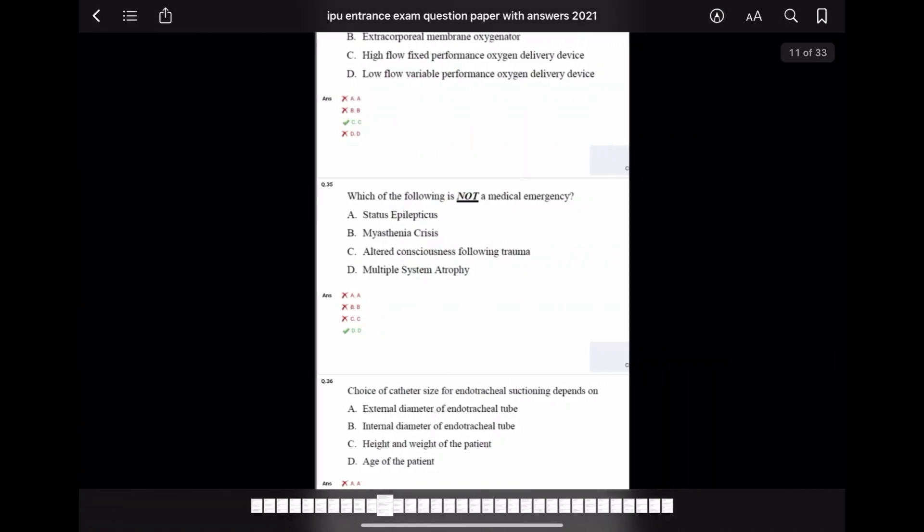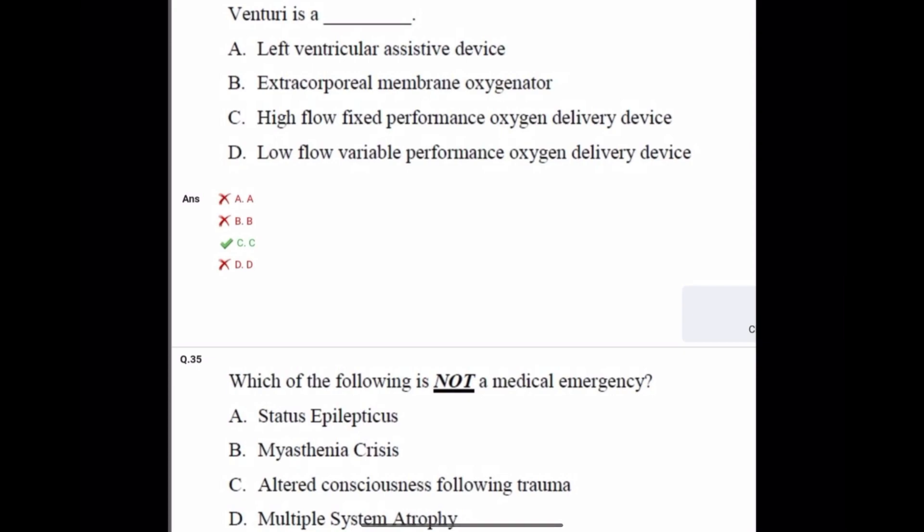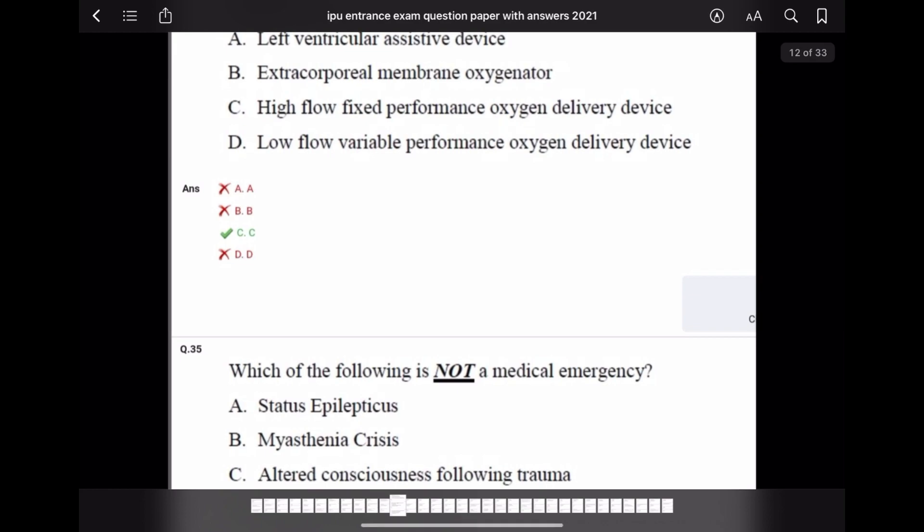Question number 34: Venturi mask is a high flow fixed performance oxygen delivery device. Answer is C.